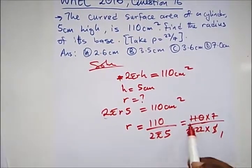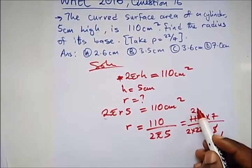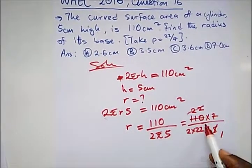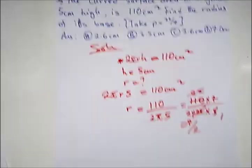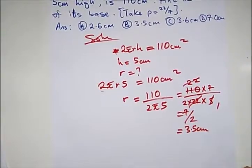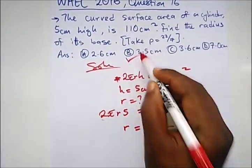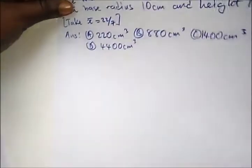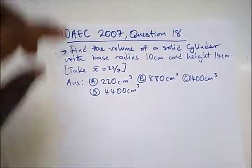Here we can cancel, so 5 here, 1. 5 will go into this how many times? That's 2, remember, that's 2. And 22 will cancel this, so we're left with 7 over 2, that's 3.5 centimeters. So our right option is option B.